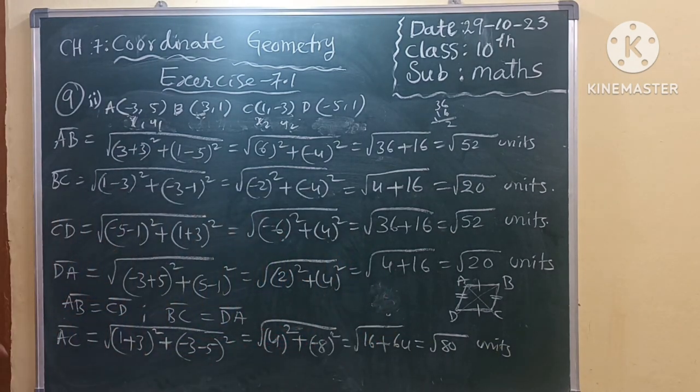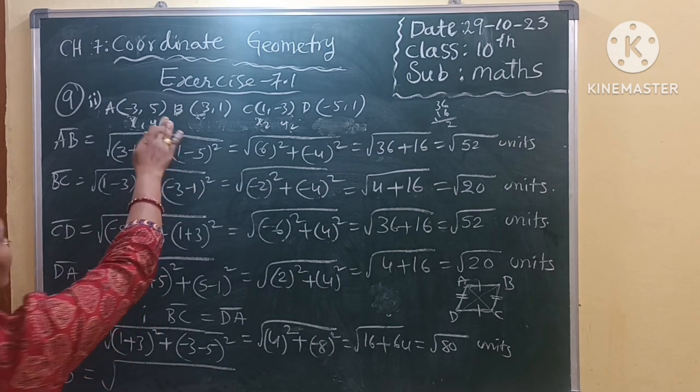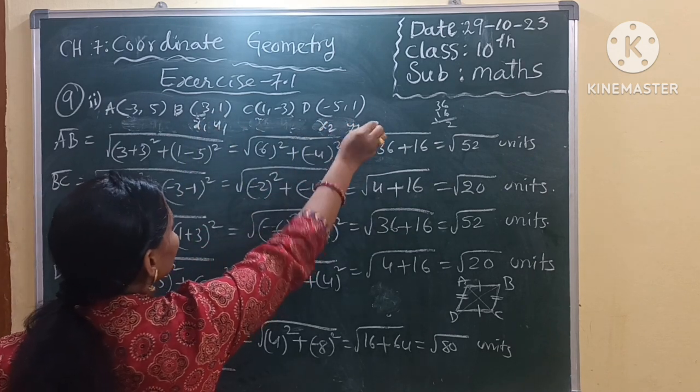Now what about BD? Once check BD diagonal also. So BD diagonal means this is X1 Y1, X2 Y2.